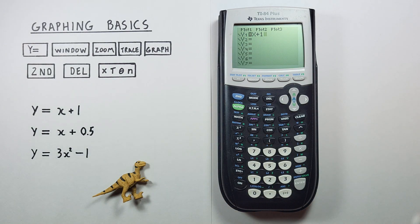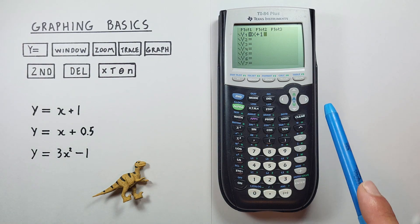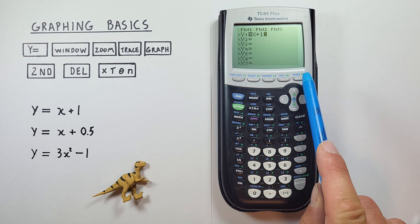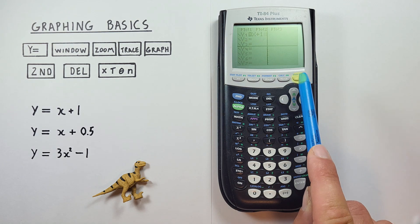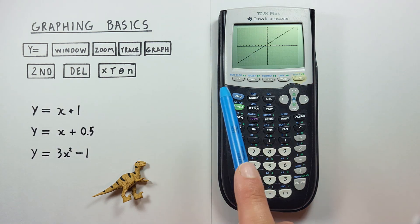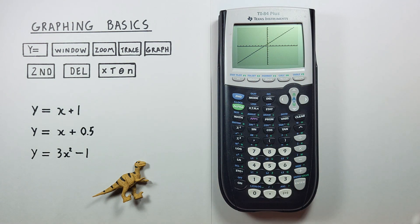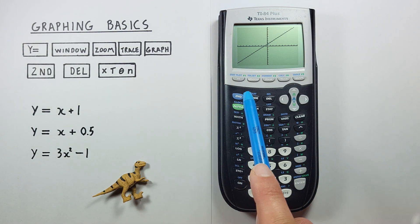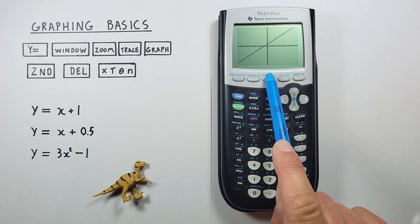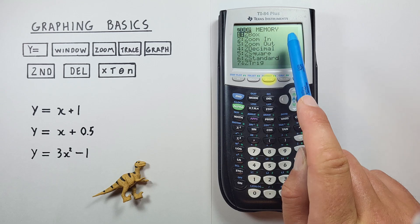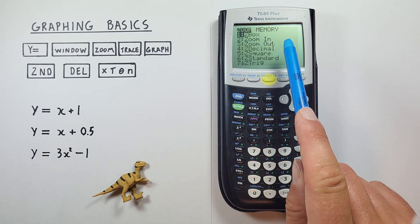Now if we want to view it, all we have to do is hit the graph key here, and it'll go ahead and graph what we've entered. If we want to zoom in on this, all we have to do is press the zoom key, which brings up the zoom menu.